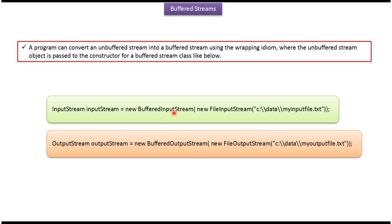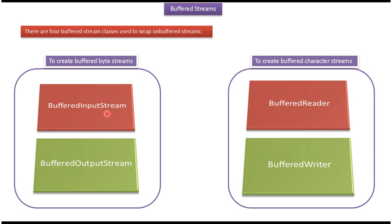Using wrapping technology, the unbuffered streams can be converted into buffered streams. Here, buffered input stream wraps file input stream, and buffered output stream wraps file output stream. To create buffered byte streams, we can use buffered input stream and buffered output stream. To create buffered character streams, we can use buffered reader and buffered writer.